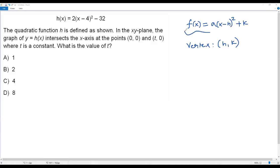Let's compare the quadratic function f(x) and h(x) we have in the problem. What value do we have at the place of h? We have 4. What value do we have at the place of k? We have -32. So this is the vertex of the given quadratic function h(x).